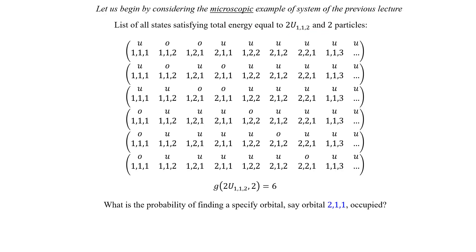In this lecture we want to answer the question: what is the probability of finding a specific orbital of an electron gas occupied? This term 'gas' denotes a macroscopic system — we have a macroscopic number of electrons. But to show how we're going to calculate it, we're going to start by considering a microscopic system, a small system like the system with two electrons only. Once we show the logic in a microscopic system, then we extend it to the macroscopic system, the gas of electrons.